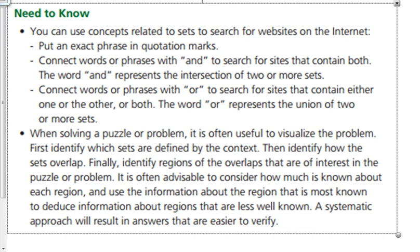When you're solving a puzzle or a problem, it's often useful to visualize the problem, first identify which sets are defined by the context, then figure out how the sets overlap. Finally, identify regions of the overlaps that are of interest in the puzzle or problem. It's often advisable to consider how much is known about each region and to use the information about the region that is most known to deduce or figure out information about regions that are less well known. A systematic approach will result in answers that are easier to verify.